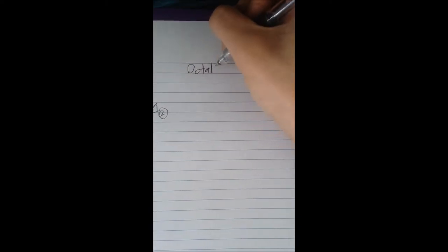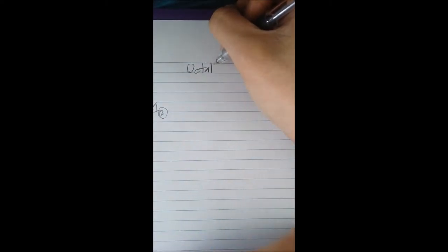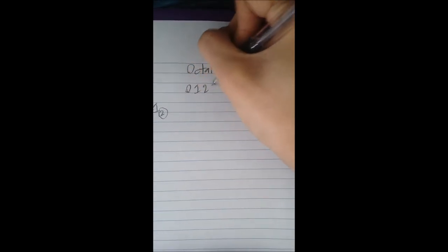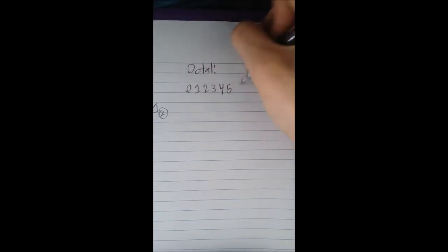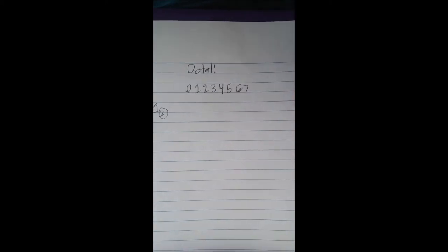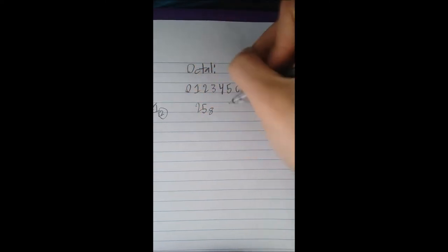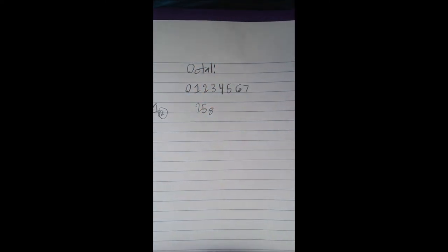Now what about if we were to try octal? Octal has 8 possible digits. So it has 0, 1, 2, 3, 4, 5, 6, 7. An example octal will be, let's say, let's just pick 25. Then your subscript will be 8.